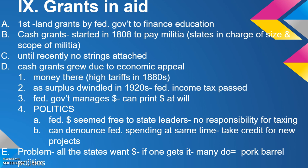The big piece politically was that federal money seemed free to state leaders — there was no responsibility for taxing to get it. You could take the money and do what you want, and simultaneously criticize the federal government for taxing and spending too much while taking credit for new projects in your state funded by that federal money. As grants grew and grew, every state wanted money, and if one got it, many would — leading to pork barrel politics.